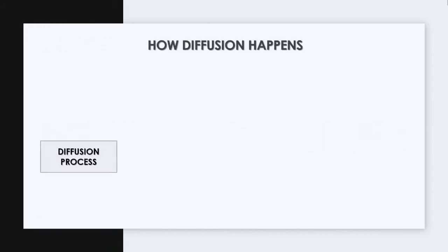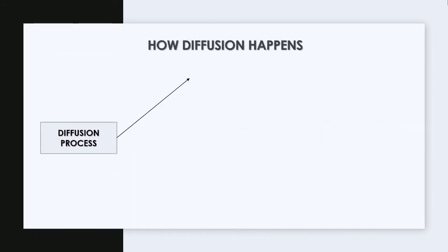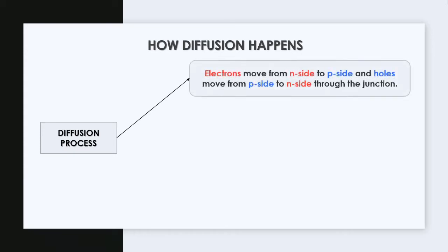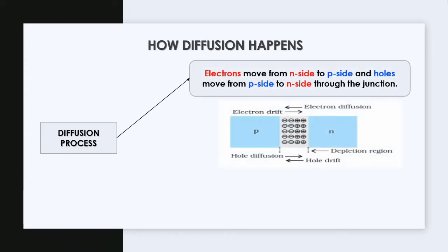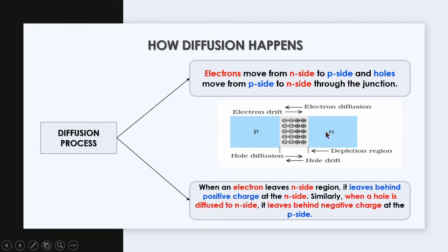How does diffusion happen? Diffusion happens when electrons move from the N side to the P side and holes move from the P side to the N side through the junction. When an electron leaves the N side region, it leaves behind positive charges at the N side. Similarly, when a hole is diffused to the N side, it leaves behind negative charges at the P side.